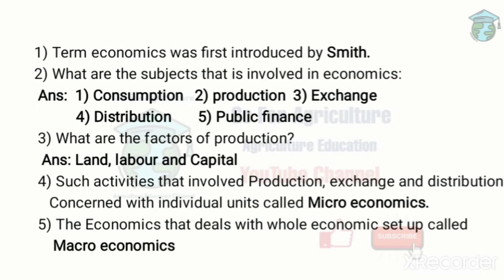The next question: what are the factors of production? They are land, labor, and capital. Land is anything above the earth's surface that is freely given by nature. Labor is an active factor of production, and capital is a passive factor.